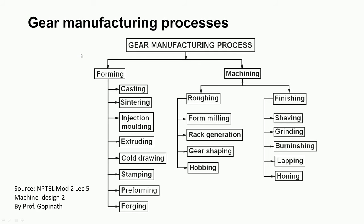Gear manufacturing processes include forming operations — which are chipless — and machining. In the forming process, methods include casting for large gears, sintering, injection molding, extruding, cold drawing, stamping for thin gears, preforming, and forging.